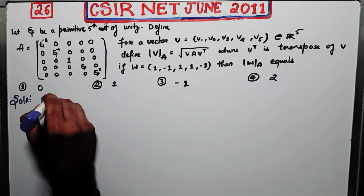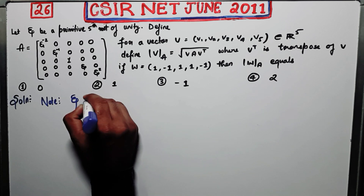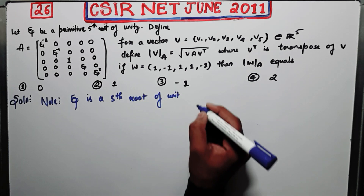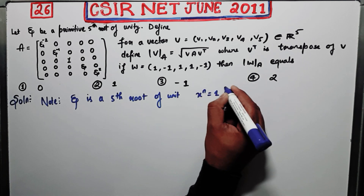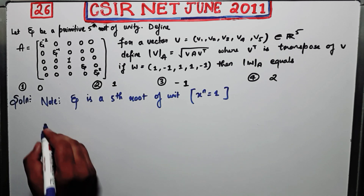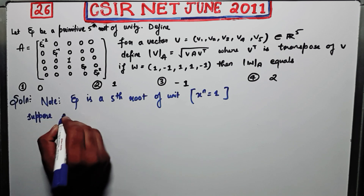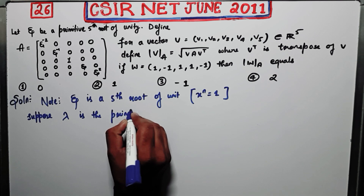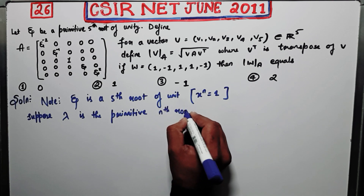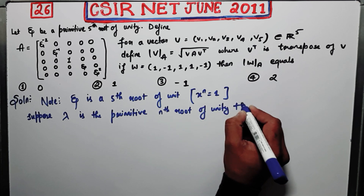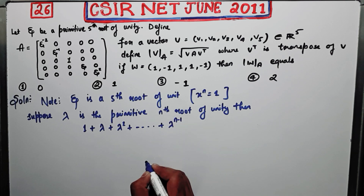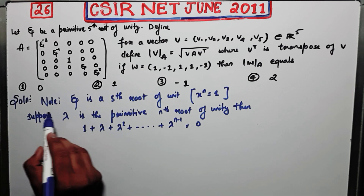The first important thing to note here is that Xi is a primitive fifth root of unity, meaning Xi is a root of x^5 = 1. One important property you should know about the nth root of unity is: suppose Lambda is the primitive nth root of unity, then 1 + Lambda + Lambda^2 + ... + Lambda^(n-1) = 0. This is an important note to remember regarding the primitive nth root.